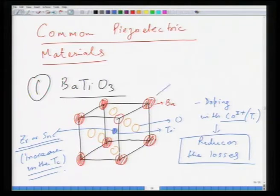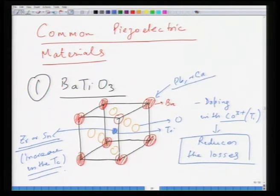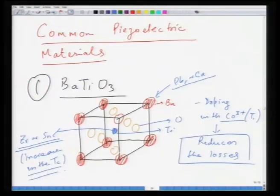Barium can also be replaced by larger ions such as lead or calcium, which lower the Tc of barium titanate, especially from the tetragonal to orthorhombic transition below 120°C. All these dopants can be used to control the piezoelectric properties. The polar vector of barium titanate is along the 001 axis in the ferroelectric state, where it has a tetragonal structure.